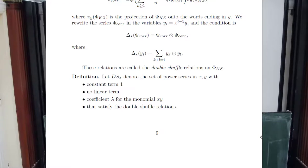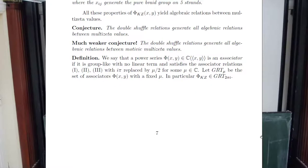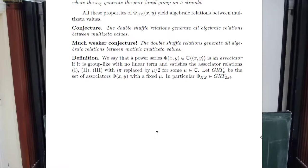So phi-corrected is group-like for one coproduct and a modified version is group-like for a second coproduct—these are the double shuffle relations. Just like for associators, you can define DS_mu—the set of series satisfying double shuffle relations with parameter mu. The big conjecture here is: do they generate all algebraic relations on multiple zeta values? The answer is we really don't know, but we know a lot. We know lots of relations and do not know if they come from double shuffle, but there's no reason to think they don't. There's been a lot of dimension calculations which ensure, in reasonably small weights, that this is actually the case.